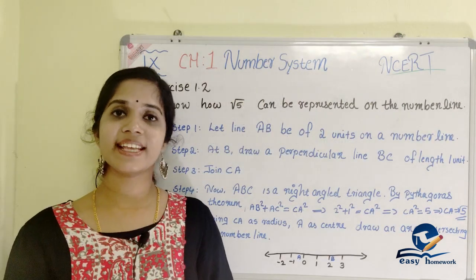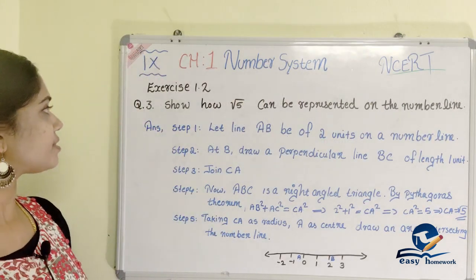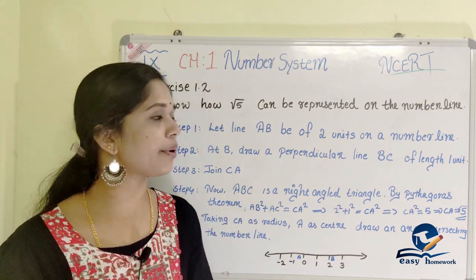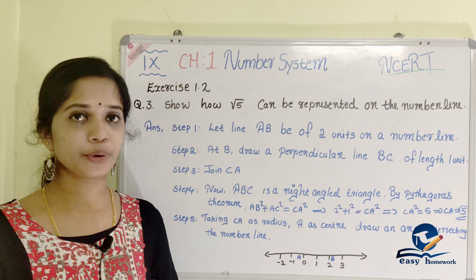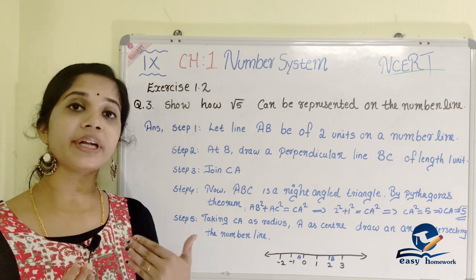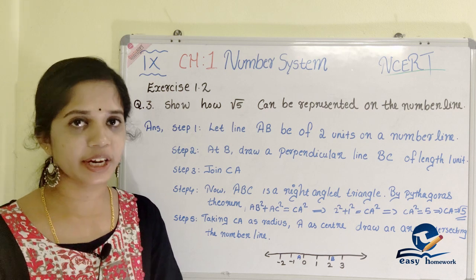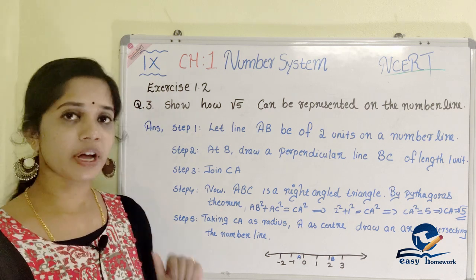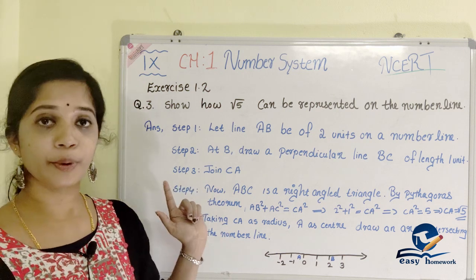Next is exercise 1.2, third question. The third question is: Show how root 5 can be represented on the number line. We can represent root 2 and root 3 on the number line. If we represent root 5, it is a step by step procedure.